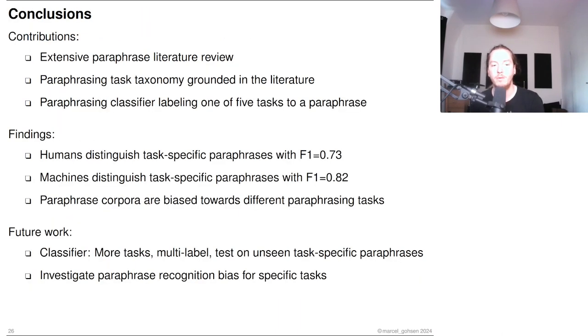So to sum up, we conducted an extensive literature review to construct a paraphrasing task taxonomy with 25 different tasks. We also created an automatic classifier that can assign one of five tasks to a paraphrase example. We found that both the human and the automatic classifier can classify paraphrases from different tasks effectively. We also saw that common paraphrase corpora are biased towards different paraphrasing tasks.